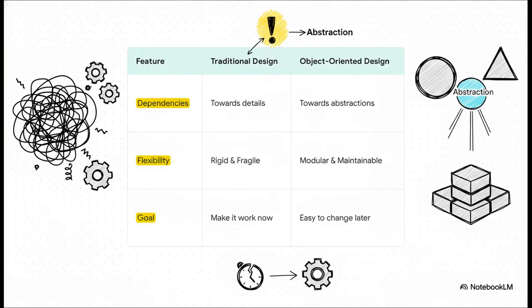With traditional design, your dependencies point toward the nitty-gritty details, and that makes your system rigid and fragile. The goal is just make it work right now. But with object-oriented design, the dependencies point toward abstractions, creating these modular, maintainable systems. The goal isn't just to make it work now, it's to make it easy to change later.